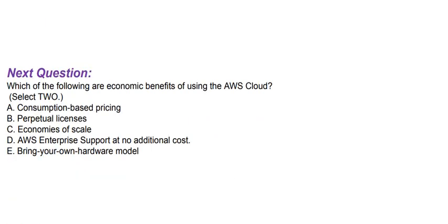Next question: Which of the following are economic benefits of using the AWS cloud? Select two options. Option A: Consumption-based pricing. Option B: Perpetual licenses. Option C: Economies of scale. Option D: AWS Enterprise Support at no additional cost. Option E: Bring your own hardware model.